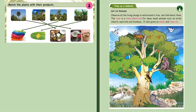A tree has a habitat. What do you mean by tree has a habitat? In the tree, around the tree, under the tree, living beings make their home. Observe all the living beings in and around the tree and talk about them. A tree is a home for many small animals like birds, insects, squirrels and monkeys.